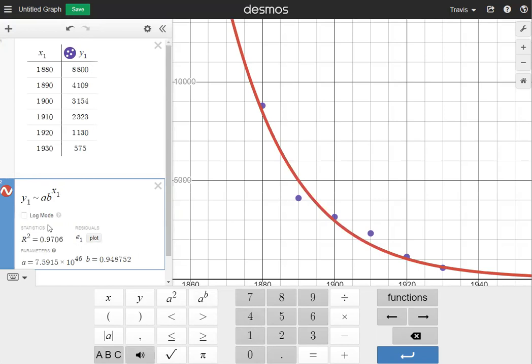Now down here in box two, it'll say log mode. For log mode, your base for the exponential expression is going to automatically be e, and I'm not going to be using that for this example. Over here in statistics, it'll give you the r squared value. Our r squared value for this example is 0.9706, which is fairly close to 1, which means that our regression is well-suited for the data.